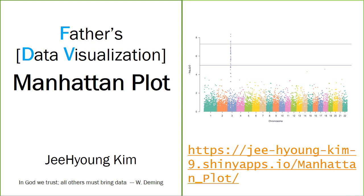Welcome to Father's Data Visualization. Today I'm going to talk about the Manhattan Plot. What is a Manhattan Plot? It is a kind of scatter plot, but the axis is chromosome. The X axis is chromosome, and the Y axis is minus log P. So it is a very specific plot.